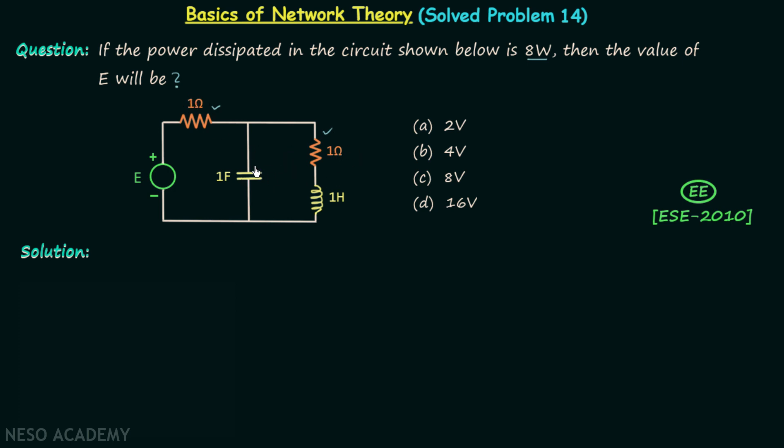There is one capacitor having the value 1 farad. There is one inductor having the value 1 henry, and there is one voltage source providing the voltage E. We are required to find out the value of E.